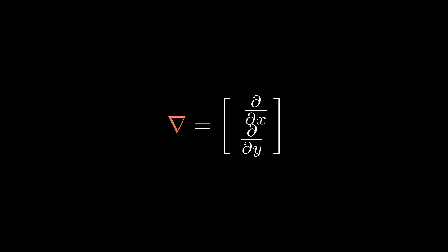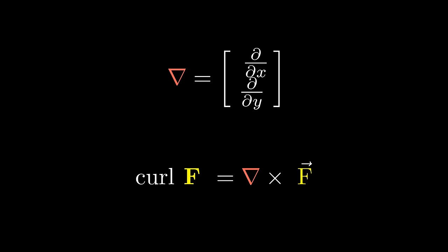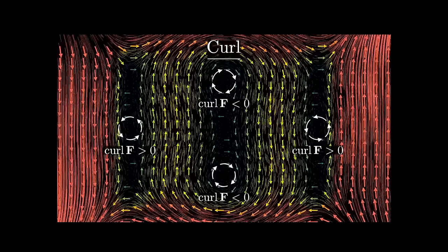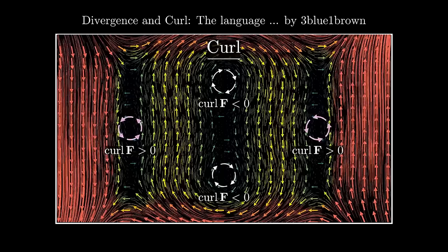We can represent curl as a cross product between the del vector, which by the way is every partial derivative, and the vector field. For now, let's not go over why, but I highly suggest watching this video by 3blue1brown if you're curious.